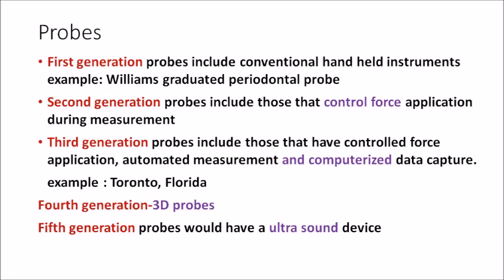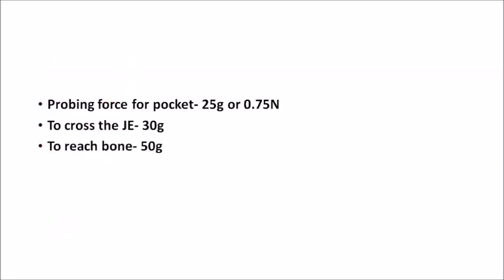Second generation probes include the Wine Valley probe and DPS probe — these are pressure-sensitive probes. Fourth generation probes are three-dimensional; we can get a three-dimensional idea of the pocket around the tooth. Fifth generation probes are true non-invasive probes — using an ultrasound device to learn about the pocket without inserting anything. The major disadvantage of first generation probes was that they were very subjective, with probe penetration varying depending on operator pressure or probe weight.